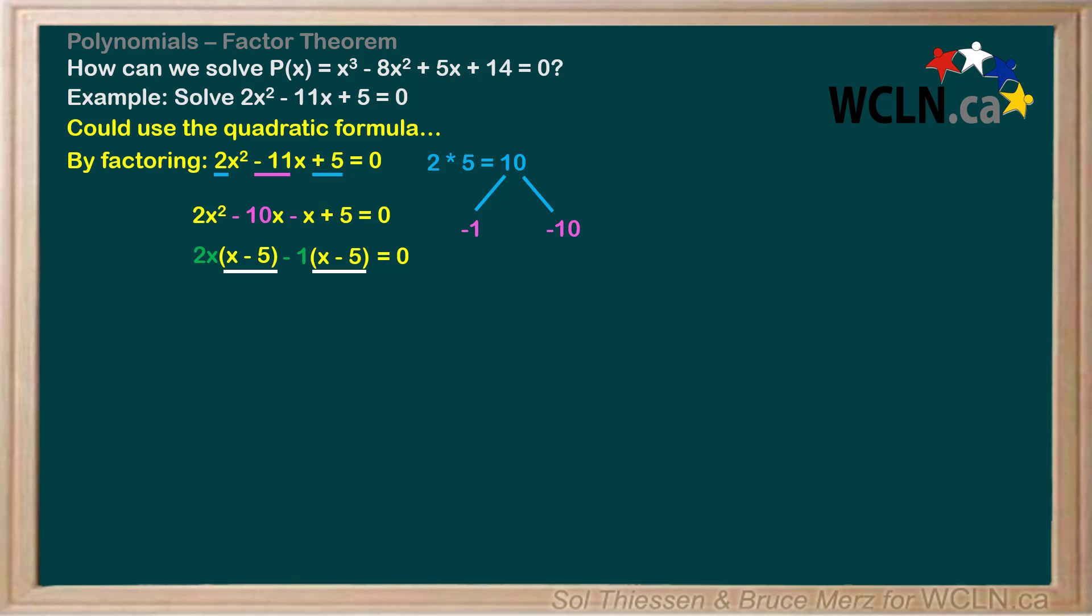Notice that the expressions in both brackets are the same. This is a sign that we're on the right track. The last step to complete the factoring is to write the expression in the matching brackets on its own, and multiply by the coefficients that were on the matching brackets, giving us (2x - 1)(x - 5).